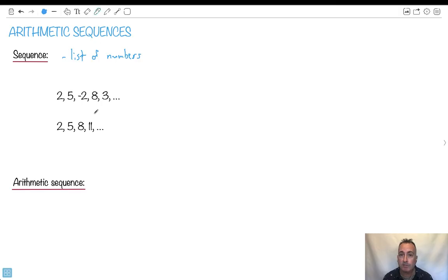Here, for example, here's two different lists. This one right here, if we look at this list of numbers, there's 2, 5, -2, 8, 3. Can you find the pattern? Hopefully not, because there's not meant to be one. There's no pattern.